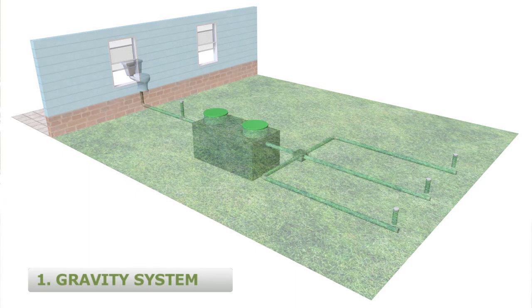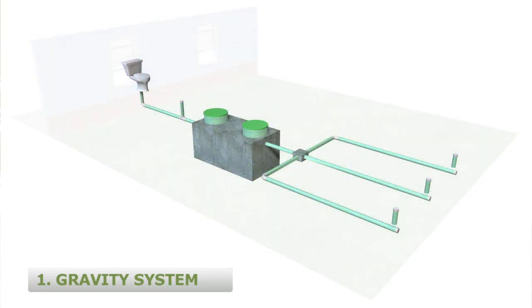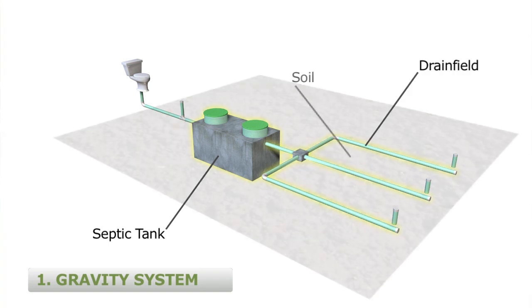Let's look at the types of systems in use today. The most basic type of septic system permitted today for long-term use is the conventional gravity system. The gravity system consists of three parts: the septic tank, the drain field, and the soil beneath the drain field.